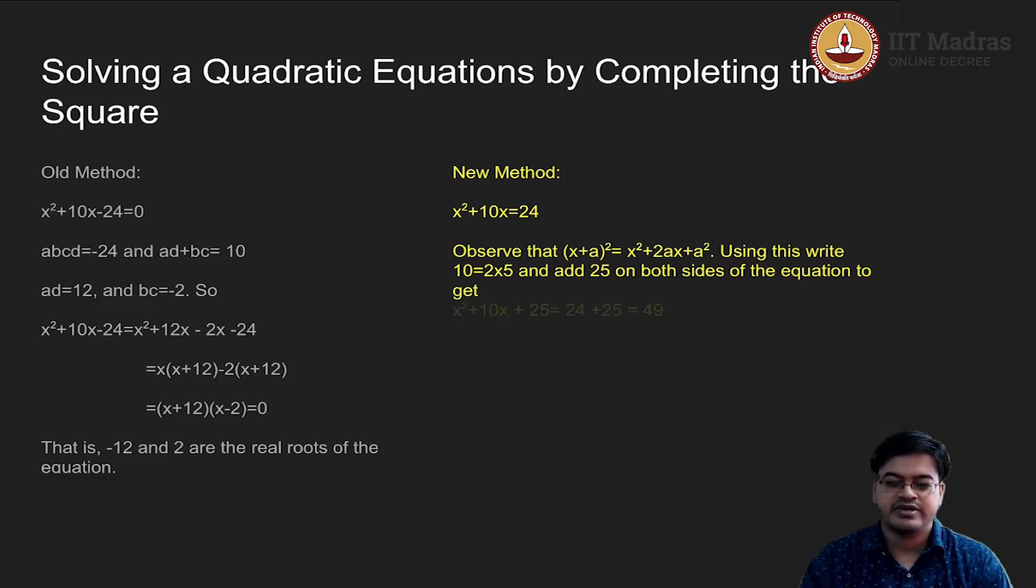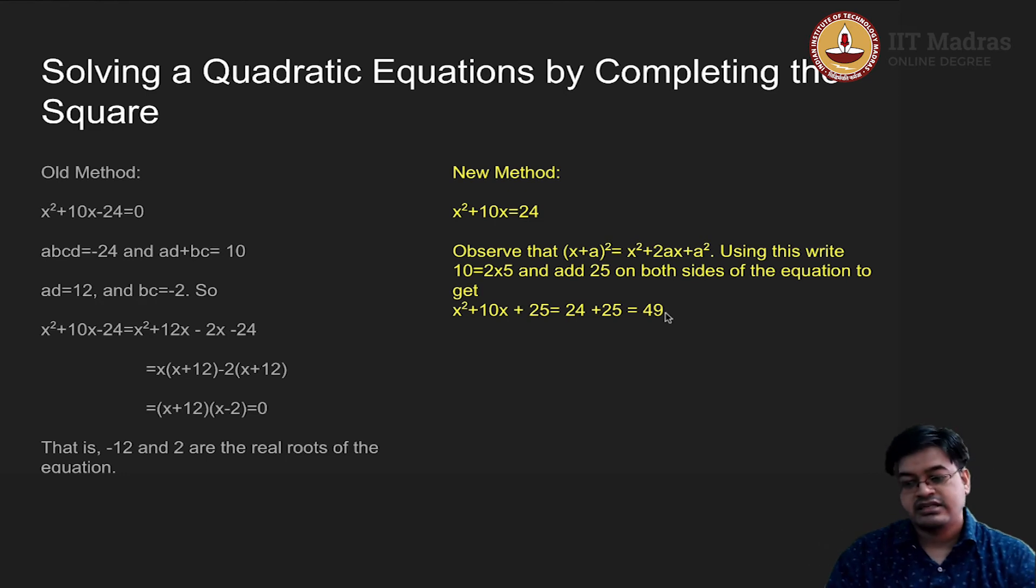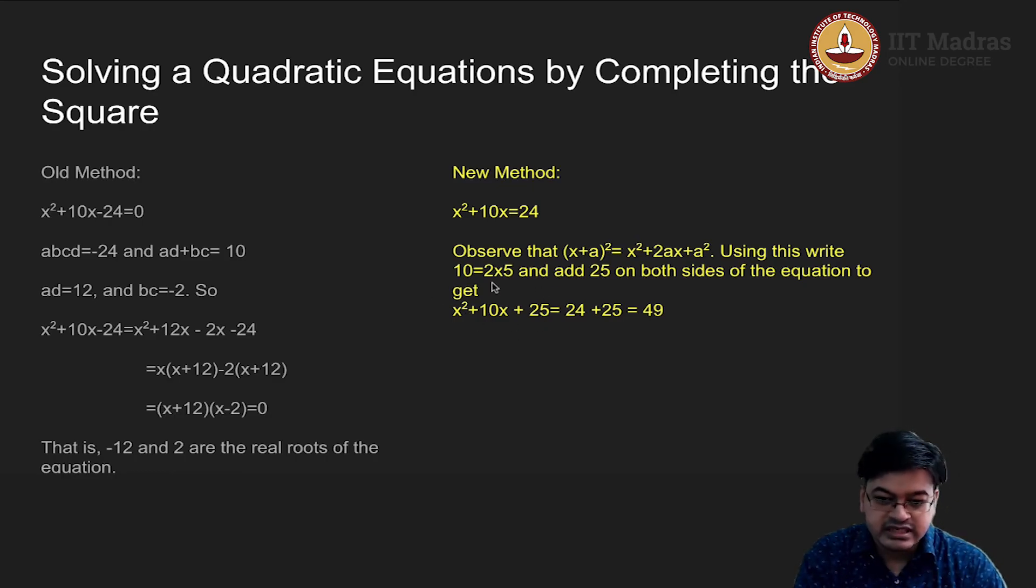What I will do is I will add the number 25 on both sides. Once I add the number 25 on both sides for this expression, I get x² + 10x + 25 which is equal to 24 which was already there plus 25. It turns out here in this case that the number is 49 which is also perfect square, but it need not be the case all the time. Now what I know here is this particular expression is nothing but (x + 5)² and then what is this? This is 7². I can rewrite this expression as (x + 5)² = 7².